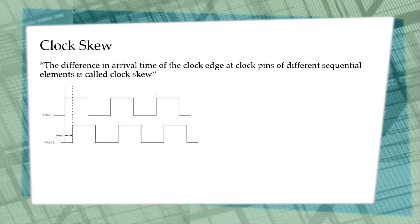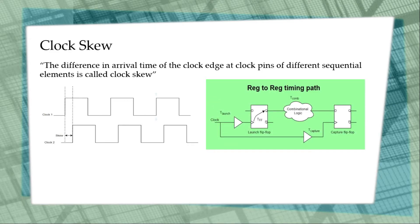Consider two clocks, clock one and clock two, in a reg-to-reg path: clock one goes to the first flip-flop and clock two goes to the second flip-flop. We assume the clock goes to both flip-flop clock pins simultaneously, but this may not be the case. Because of variations and delay in the clock paths, the clock edge may not reach both pins simultaneously. There will be some difference in arrival time of the clock edge at these pins — this is called clock skew.